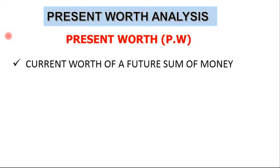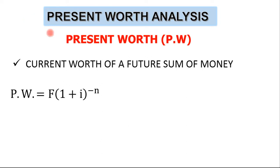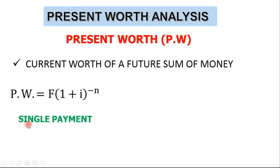Present worth is defined as the current worth of a future sum of money. This future sum represents the future cash flows, which is discounted at a discount rate. The equation we're going to use for present worth is: PW = F × (1 + i)^(−n), where F is the future value of money, i is the interest rate, and n is the compounding period. You can use this formula to get the present worth of a future amount of money if it is a single payment.